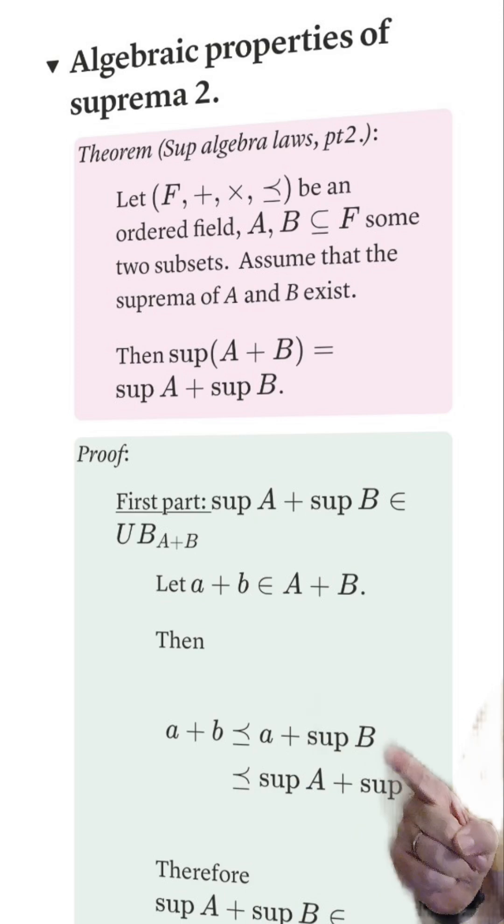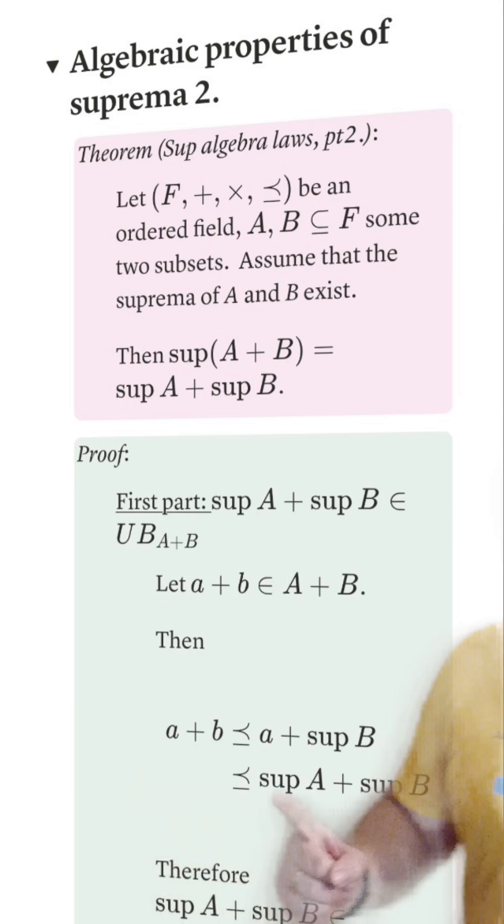Now if we replace B with sup B, we're replacing it with something bigger. If we do it again with A, we get this inequality. And by transitivity, we get that A plus B is less than or equal to sup A plus sup B. That makes sup A plus sup B an upper bound on the set A plus B.